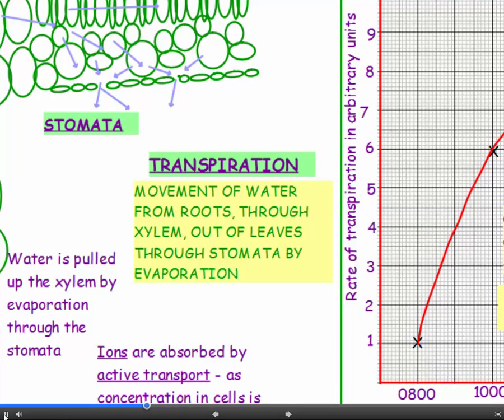So transpiration again is the movement of water from the roots through the xylem and out of the leaves through the stomata by evaporation. You need to learn that definition.